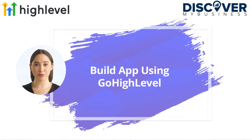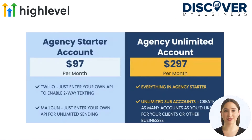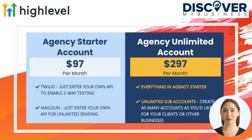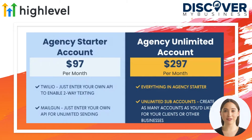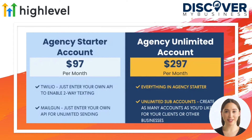Hi, in this video we will quickly tell you how to build an app using GoHighLevel. GoHighLevel has three main pricing options. The cheapest agency starter account pricing plan starts at $97 a month for a single account and full marketing automation. The most expensive plan costs $297 and $497 a month.